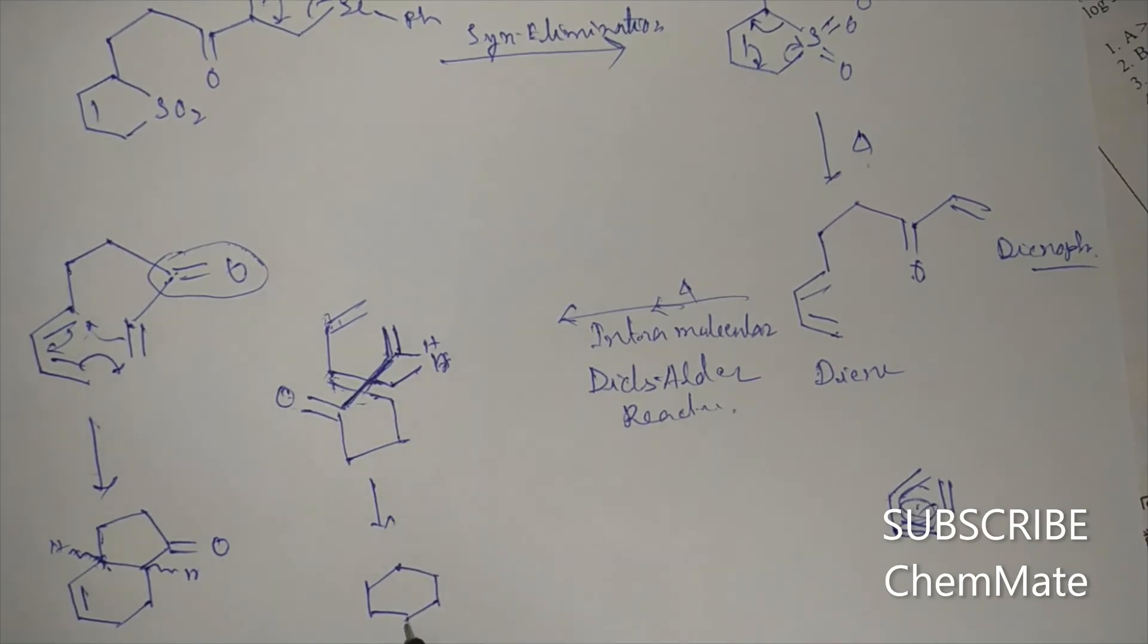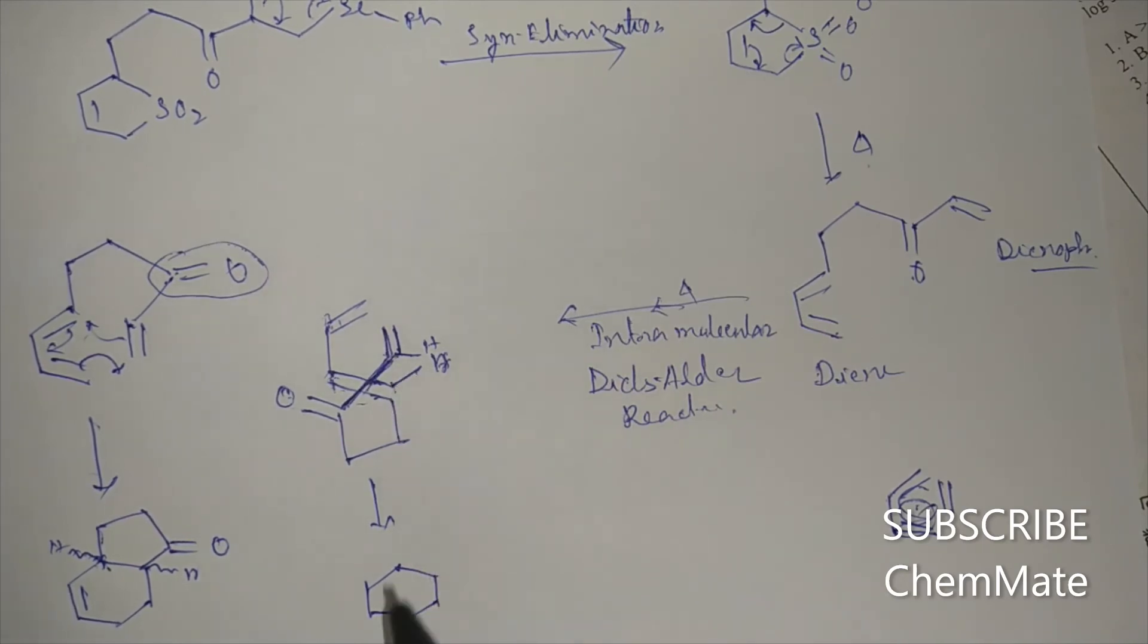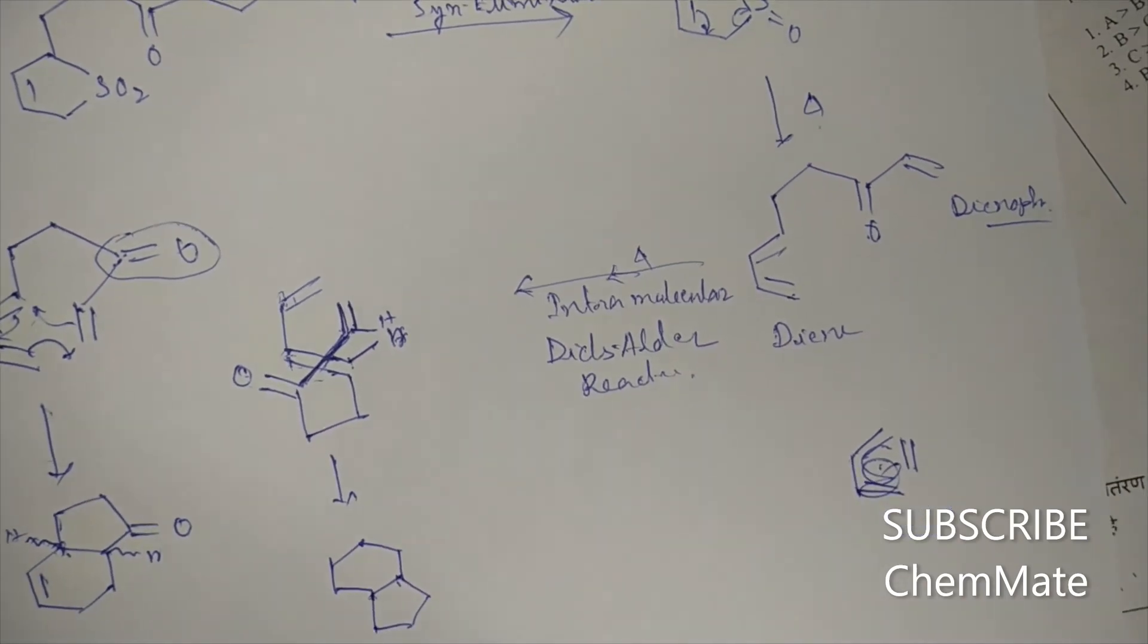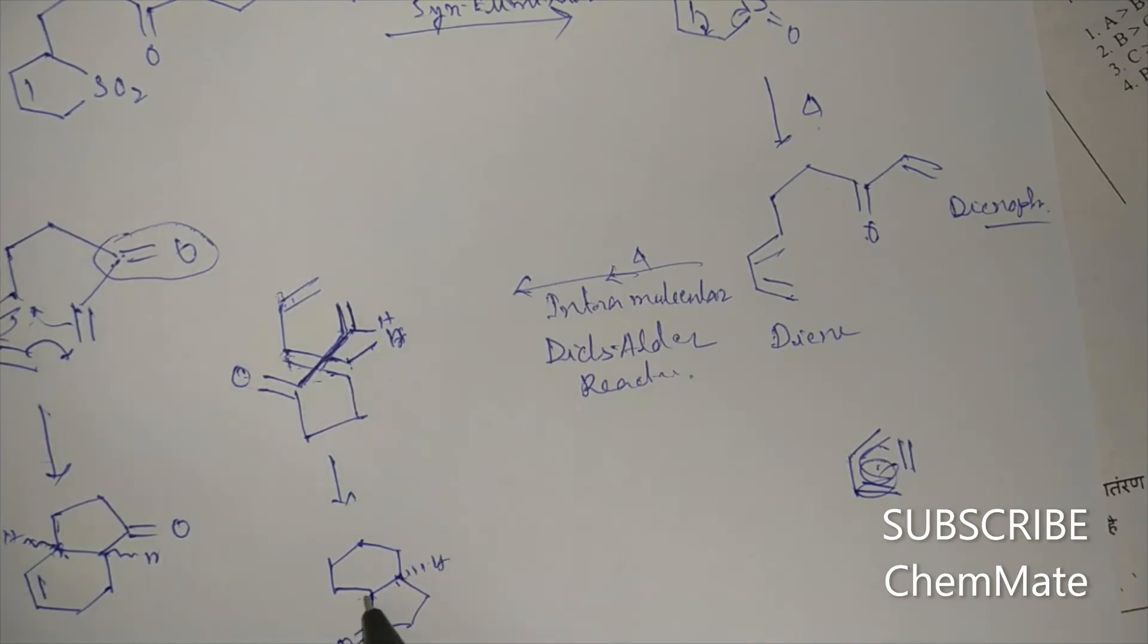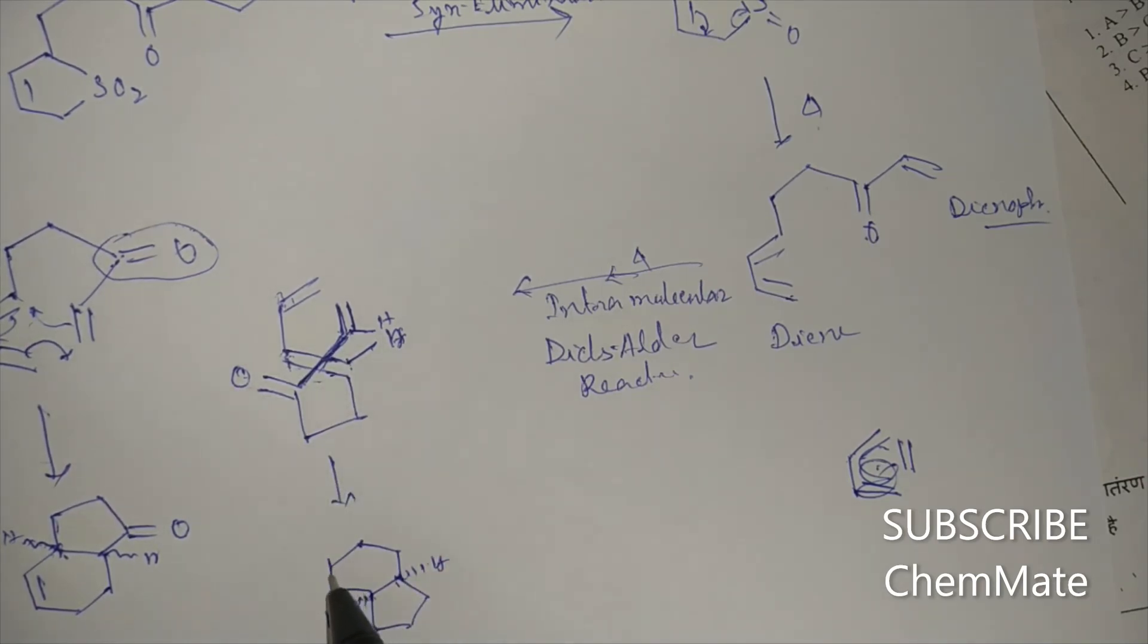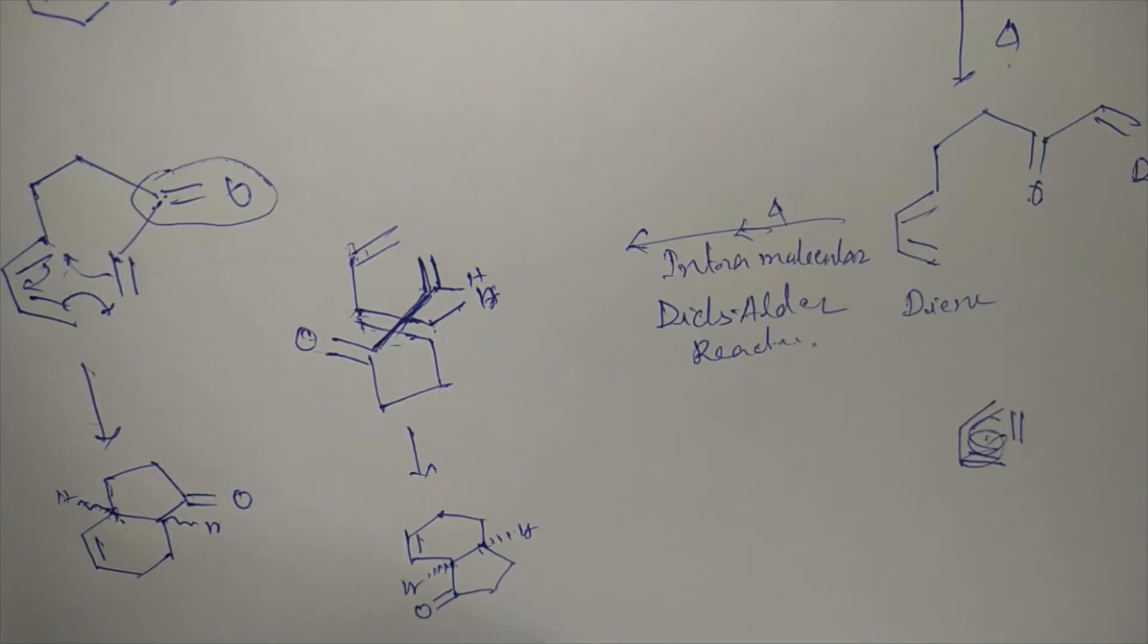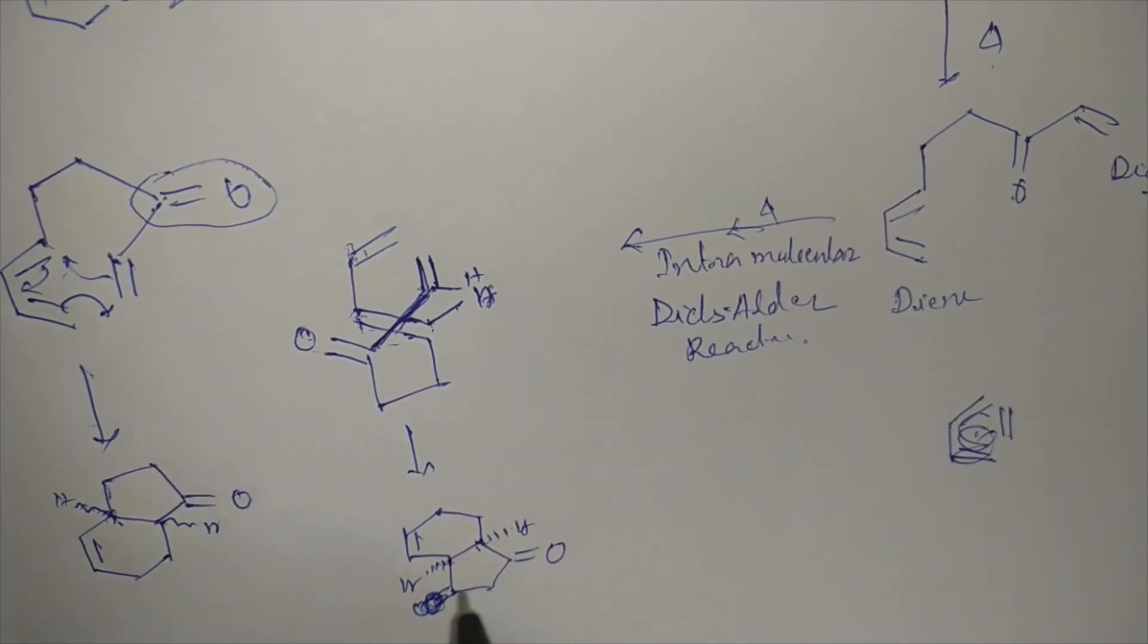So from this transition state we will get... here you can see that this carbon and this carbon will form a bond, so a five-member ring will be here. Here and the keto group here, and this hydrogen and this hydrogen will go below the plane due to this endo orientation. And here will be a pi bond. Sorry, the keto group will be here. So this will be our product.